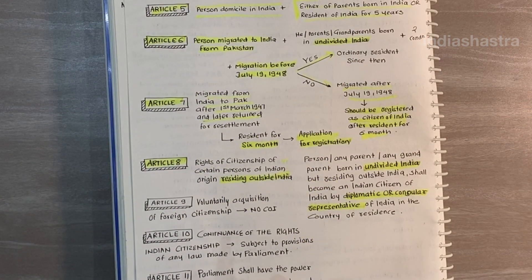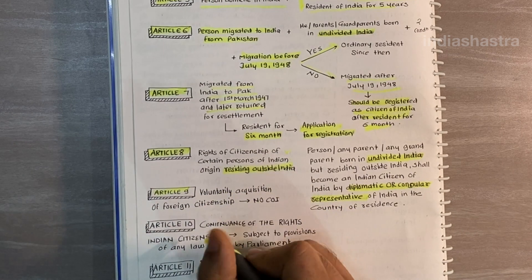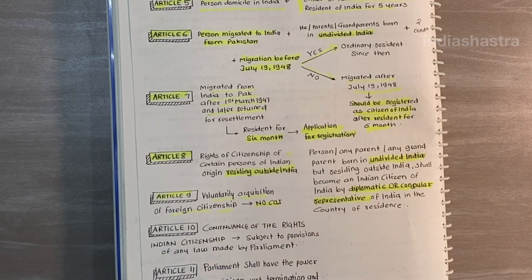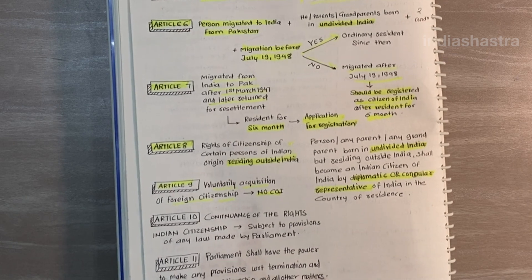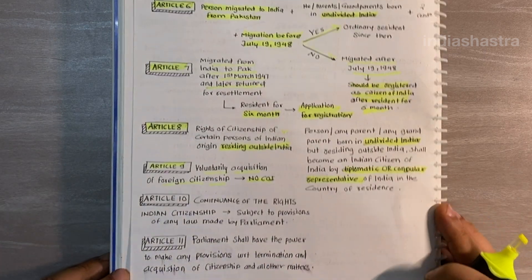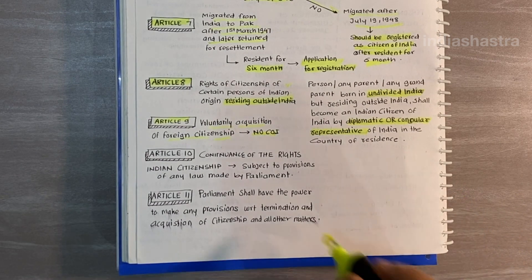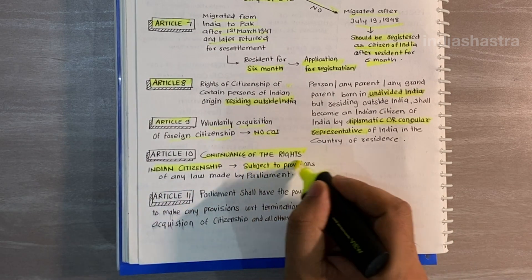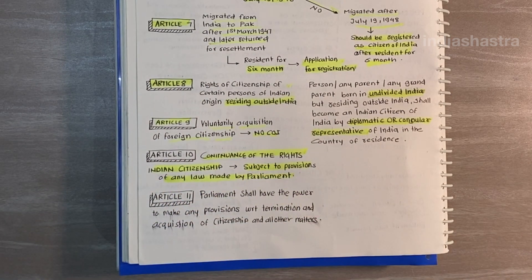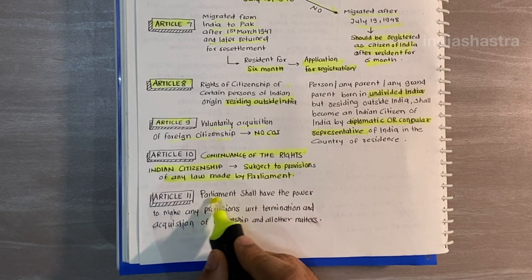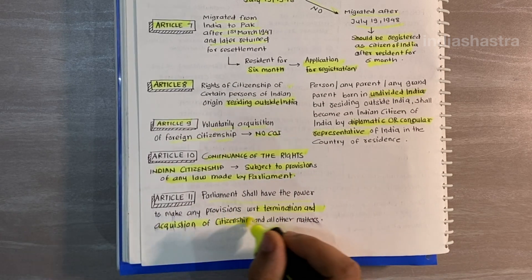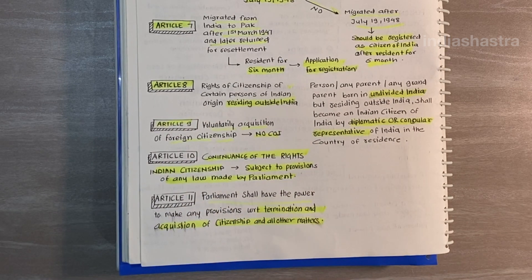According to Article 9, if a person voluntarily acquires foreign citizenship, that person will no longer be a citizen of India — meaning India does not allow dual citizenship. Article 10 says that your right to citizenship is subject to the provisions of any law made by the parliament, meaning your citizenship is subjugated to the parliament. Finally, Article 11 empowers the parliament to make any provisions regarding acquisition and termination of citizenship and all other matters related to citizenship.